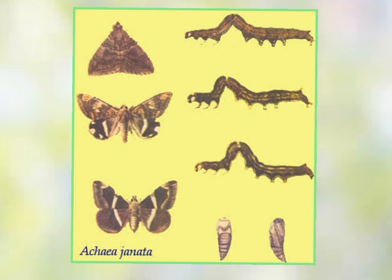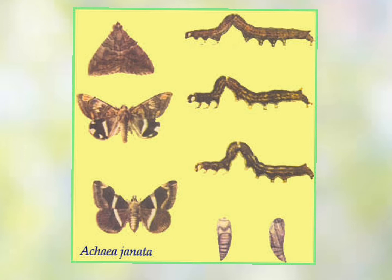How to identify this pest? We can classify them into three stages: larva, abdomen, and adult. At the larva stage, the semilooper shows varying shades of color with a black head. In the abdomen, it has a red spot on the third abdominal segment and red tubercles in the anal region.